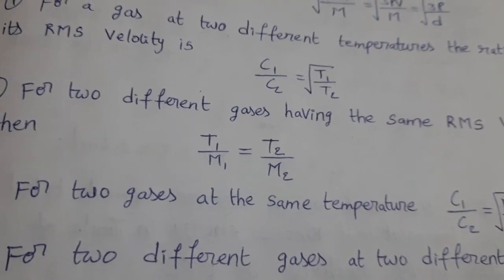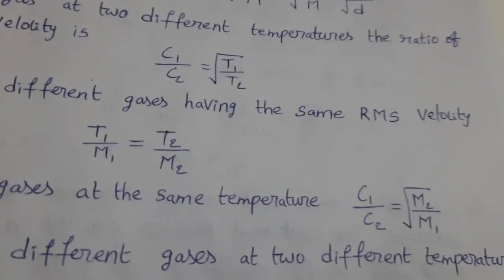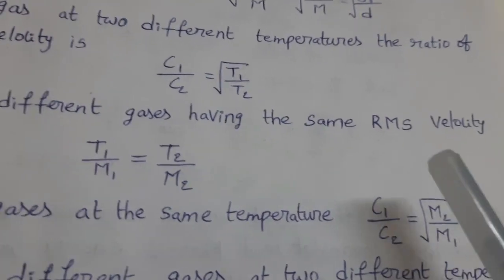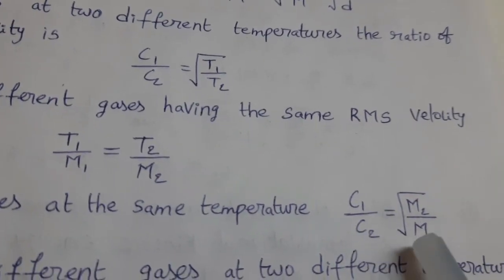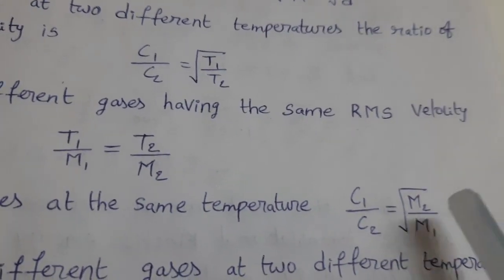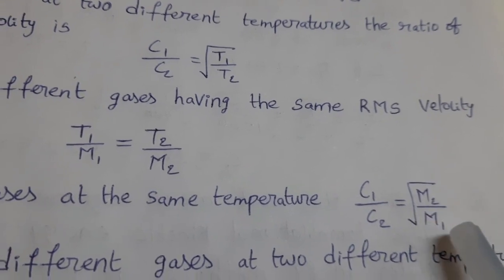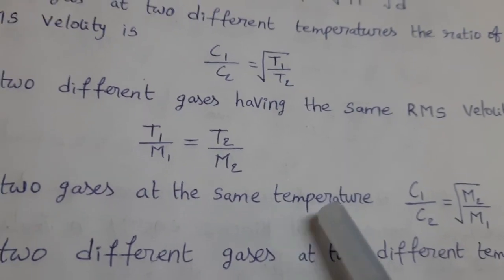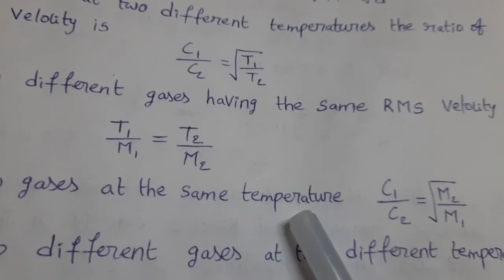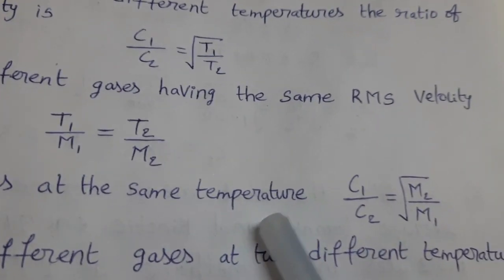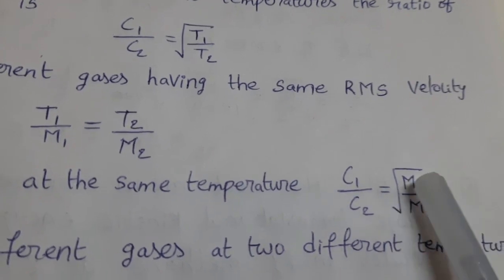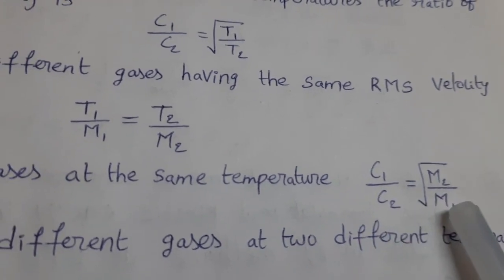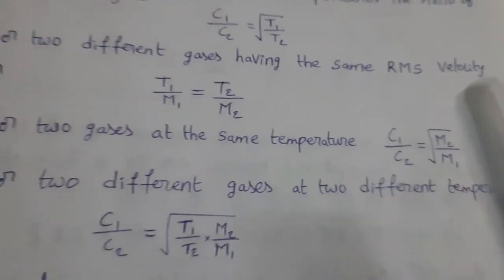For two gases at the same temperature, RMS velocity ratio C₁/C₂ = √(M₂/M₁). Temperature is same, two different gases, so molecular masses are different. This is the formula.